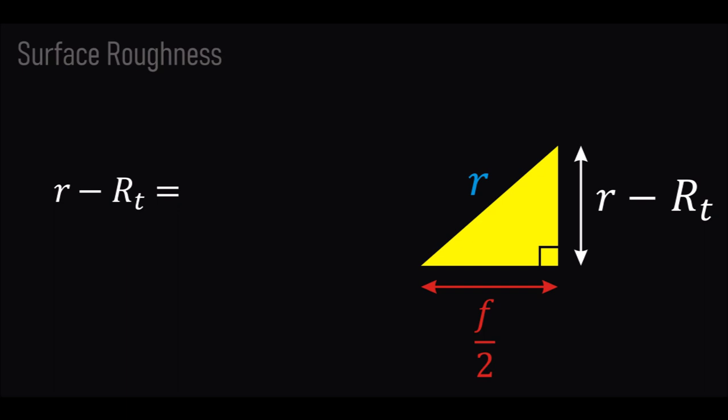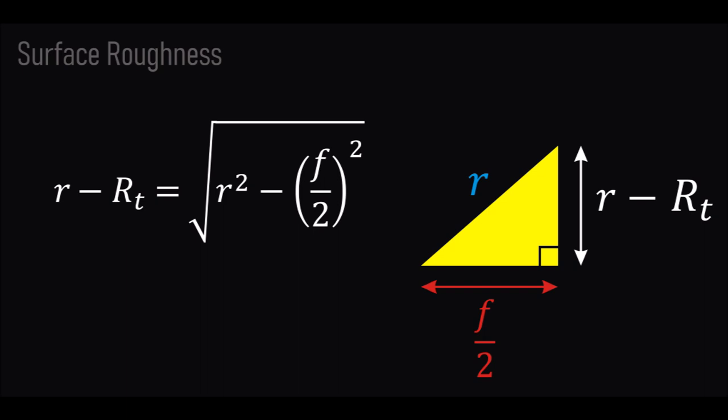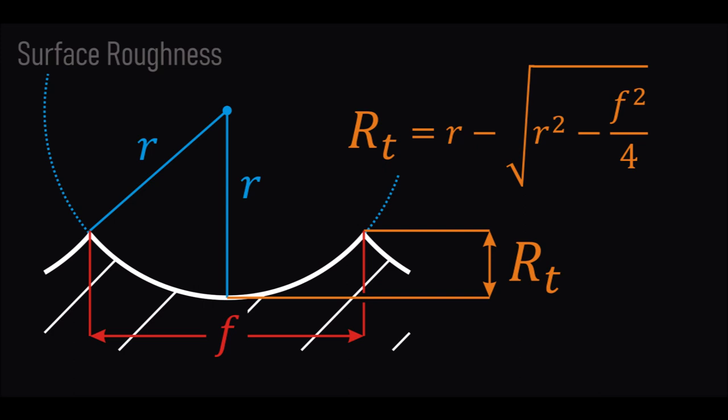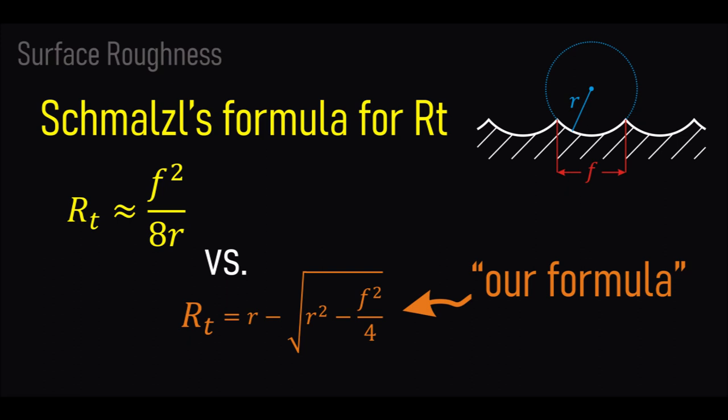Applying Pythagoras' theorem: R minus R_t equals the square root of R squared minus (F/2) squared. If we bring R from the left side to the right side and switch signs, we easily get the formula for the maximum roughness R_t. That was pretty straightforward. But how about the Schmalz formula? It's pretty different from the one we got. The reason is that the Schmalz formula is an approximation, but how can it be derived from the actual exact formula?